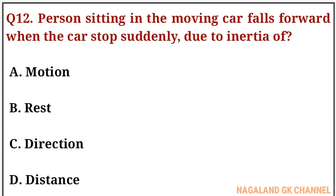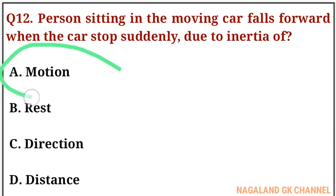Question number twelve: a person sitting in a moving car falls forward when the car stops suddenly. This is due to inertia of what? The correct answer is option number A, that is motion.